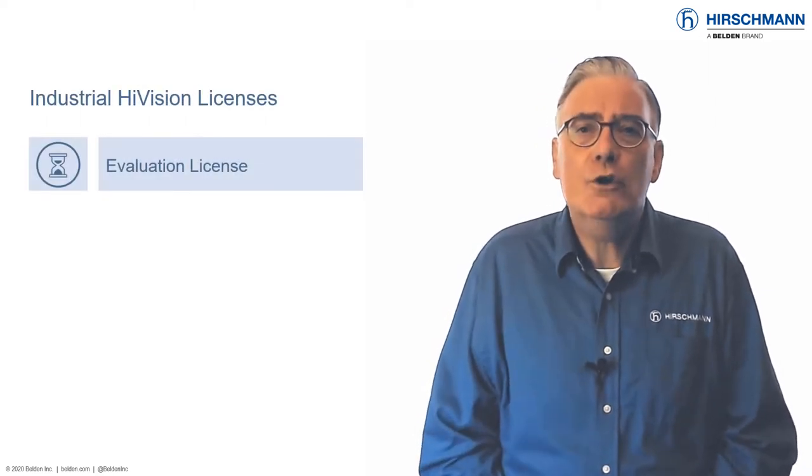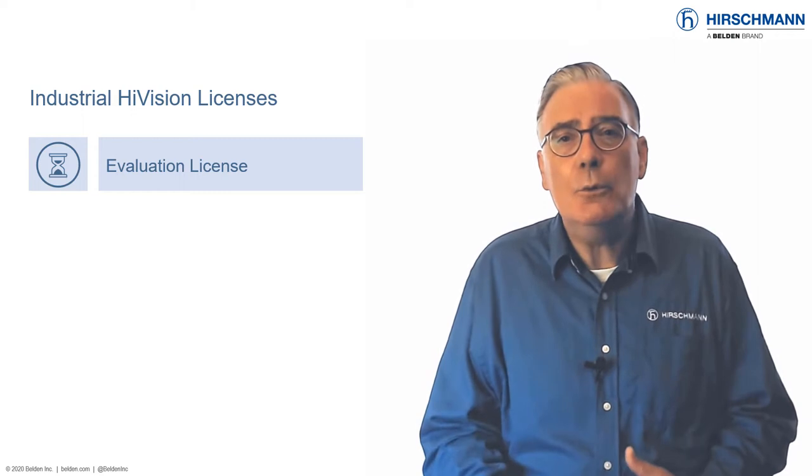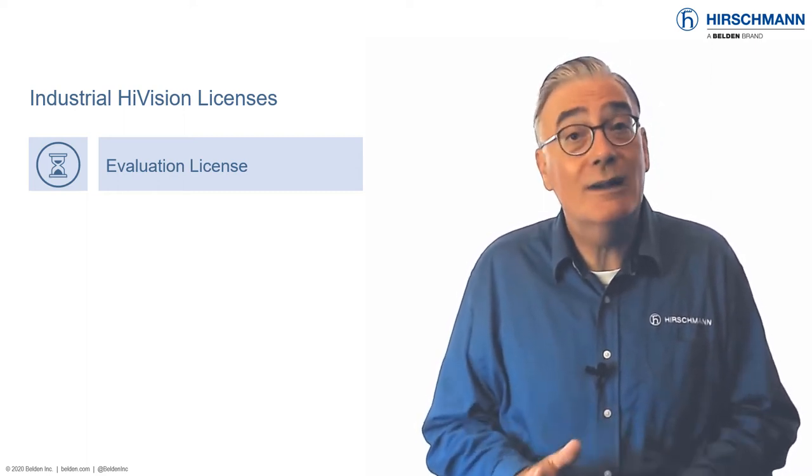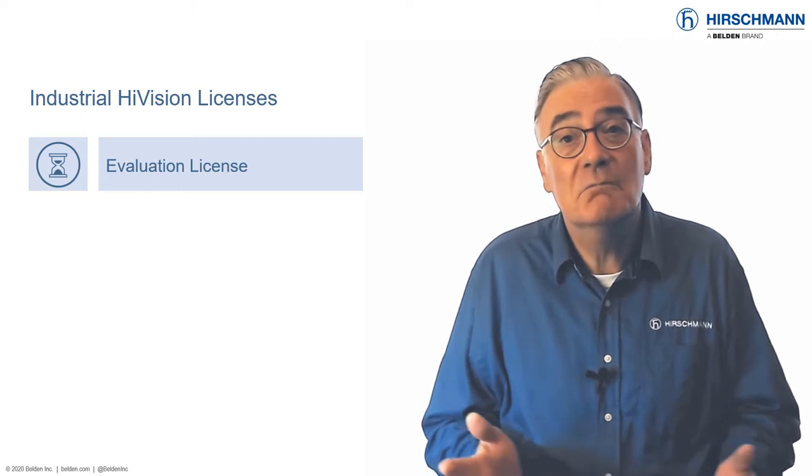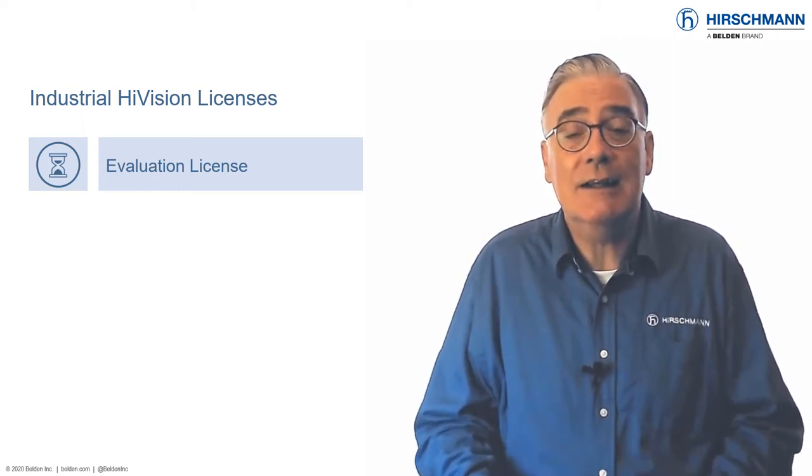When you download and install Industrial HiVision, it will run without a license for 30 days. After this evaluation period, the software will stop working. A license is then required to keep using Industrial HiVision.